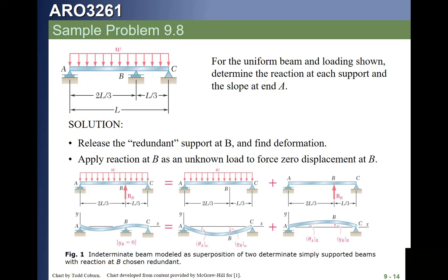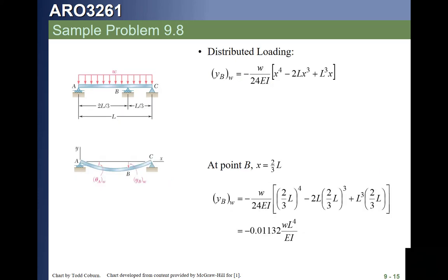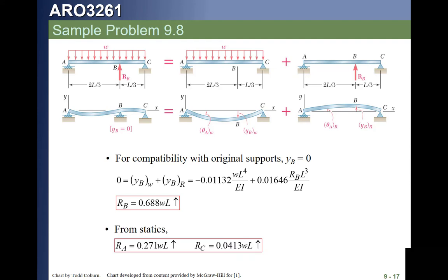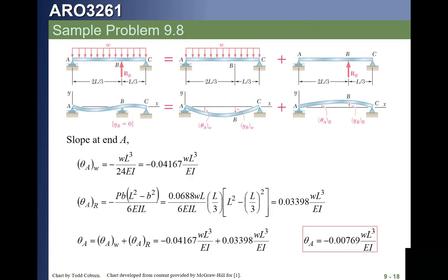Here's another example, sample problem 9.8 from Beer and Johnson, where we have a simply supported propped beam with a distributed load. We can solve this just by writing a singularity function with a reaction at A, a reaction at B, and a distributed load. Or, we can go and find two conditions. One is our canned equation for a simply supported beam with a distributed load. And then we add that to the case of a simply supported beam with a point load, where the point load is in the direction of the reaction. We solve both pieces, superimpose the results, and that will give us everything we need. And that's done here, and here, and here. And putting all that together.